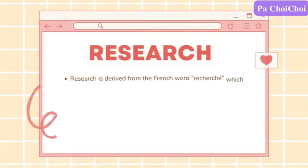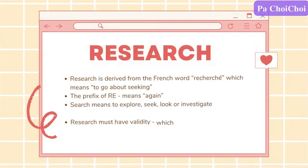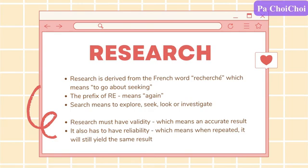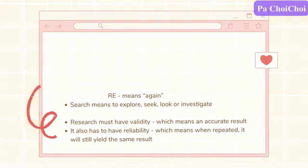Research is derived from the French word 'recherche', which means to go about seeking. The prefix 're' means again, while the word 'search' means to explore, seek, look, or investigate. Research must have validity, which means it shall have an accurate result, and it also has to have reliability, which means when repeated, it will still yield the same result.